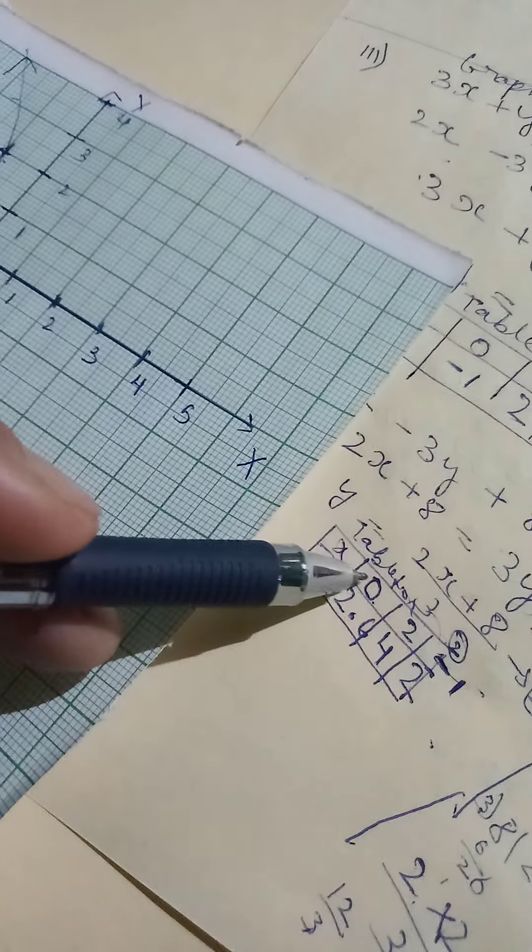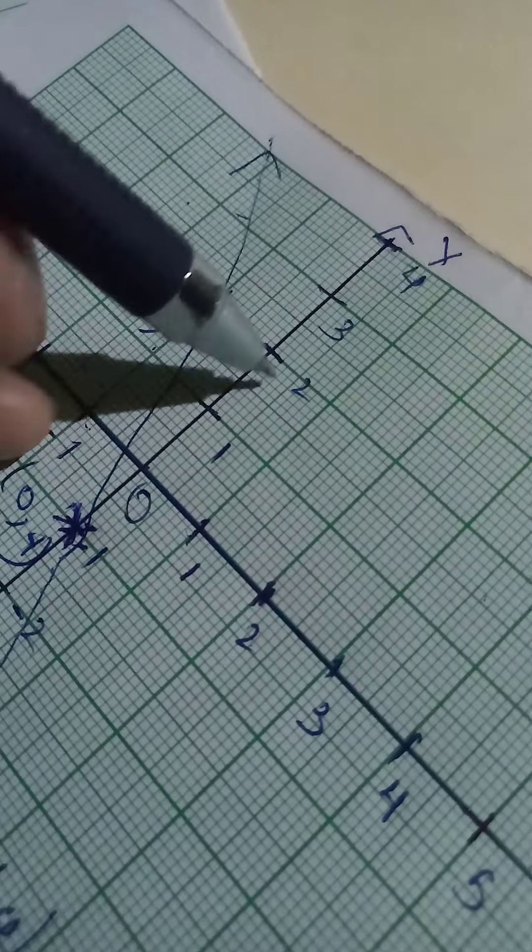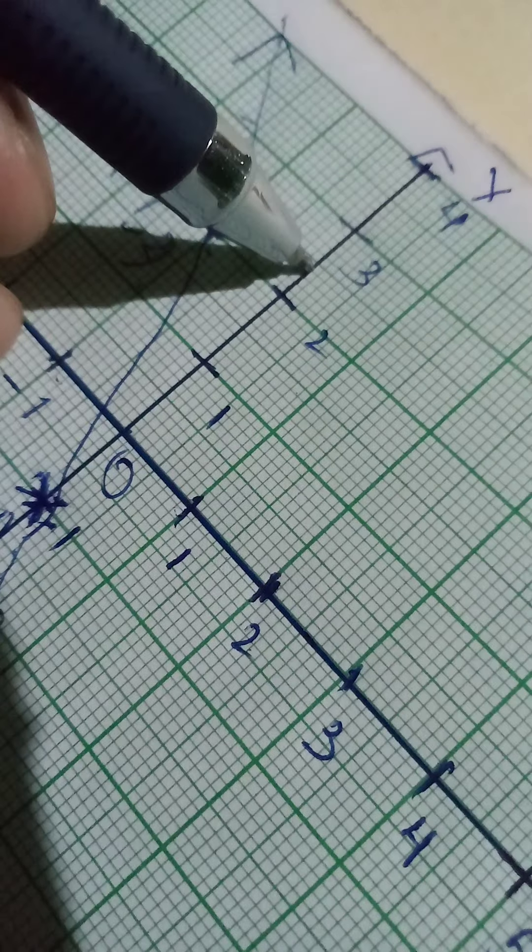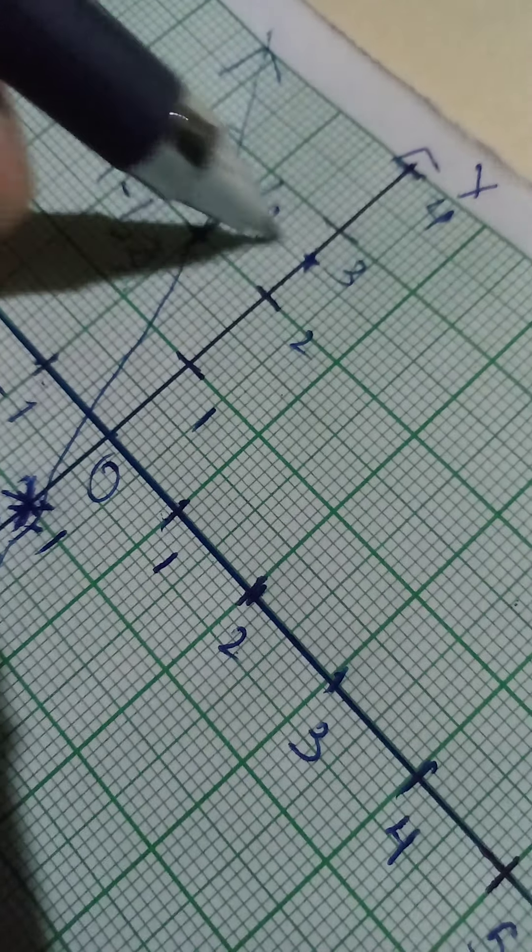Then we'll take the second one. We have 0, 2.6. X is 0, but Y is 2.6. So 2.6 plus, you take it up. You go from 2, then you count 6. 1, 2, 3, 4, 5, 6. So you mark it there. It will be 0, 2.6.